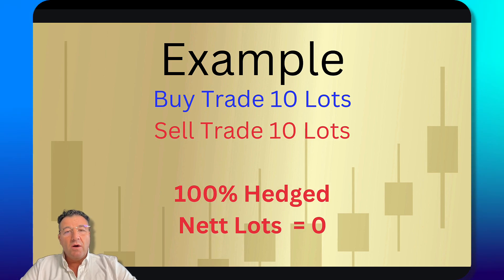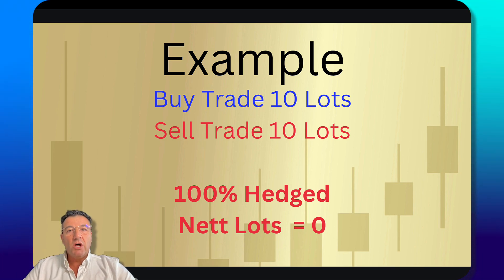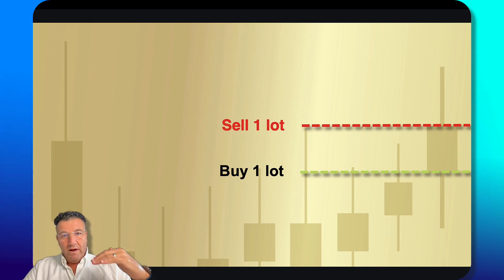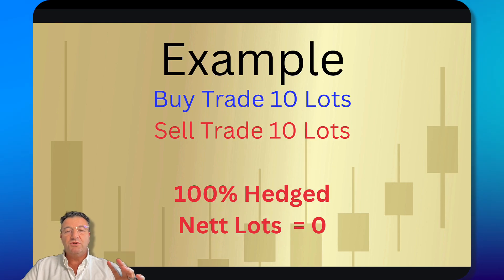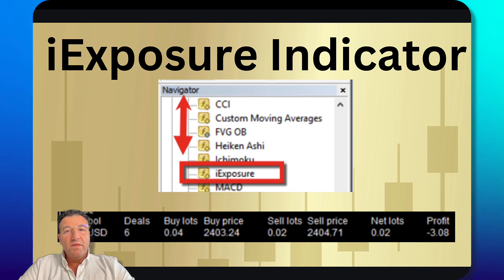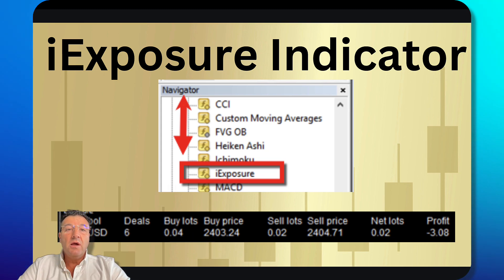If you've got 10 lots buys and 10 lots sells, you're 100% hedged and your net lots equals zero — the same as the one-lot buy and one-lot sell example. I've got a great tool that comes standard with MetaTrader 4 that you can load onto any chart, including one with a robot running on it.